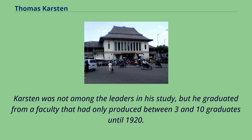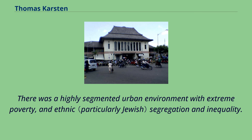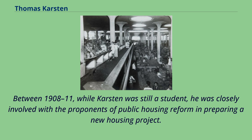Carsten was not among the leaders in his study, but he graduated from a faculty that had only produced between 3 and 10 graduates until 1920. Carsten's hometown was Amsterdam, and in the early 1920s the city suffered major socio-economic problems. There was a highly segmented urban environment with extreme poverty, ethnic segregation and inequality. Between 1908 and 1911, while Carsten was still a student, he was closely involved with the proponents of public housing reform and preparing a new housing project.